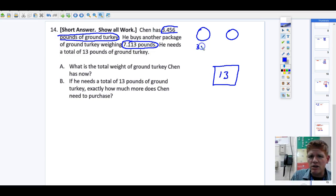So he's got 3.456, and he buys another 7.113. He needs a total of 13 pounds. Let's see what our questions are. Letter A: What is the total weight of ground turkey Chen has now? Well, he's bought this and this.